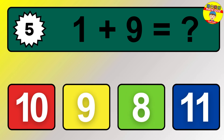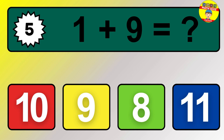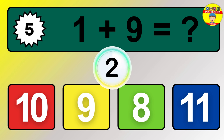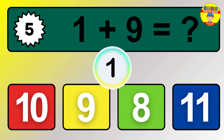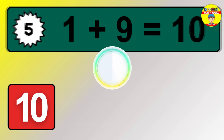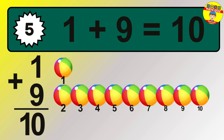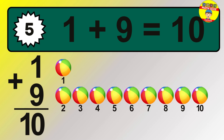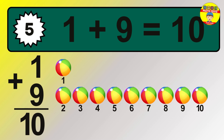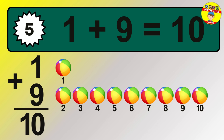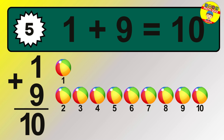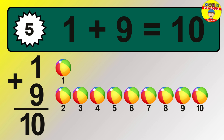Question 5. 1 plus 9 equals what? So the answer is 1 plus 9 is 10. Let's count it. 1, 2, 3, 4, 5, 6, 7, 8, 9, 10.